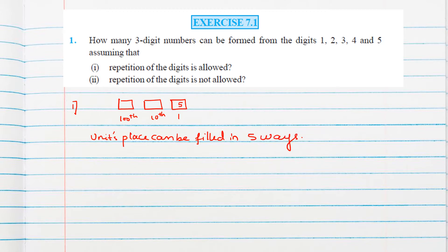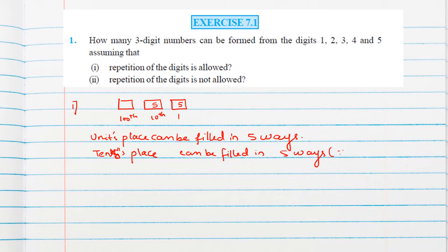Since repetition of the digit is allowed, whatever number we have filled at the units place, that number can be repeated at the tens place. So, the tens place also has five choices and can be filled in five ways.